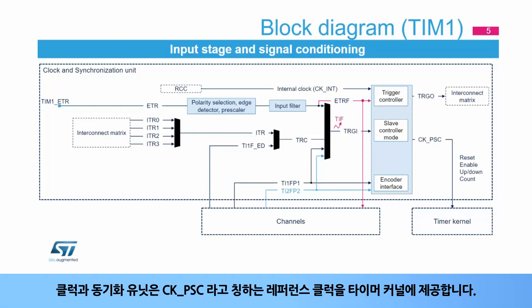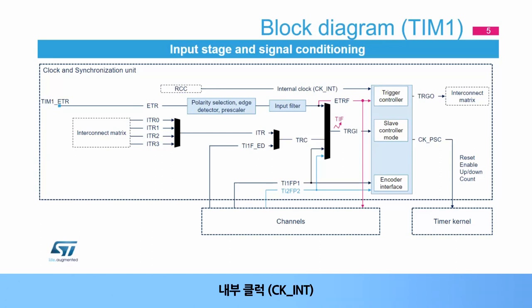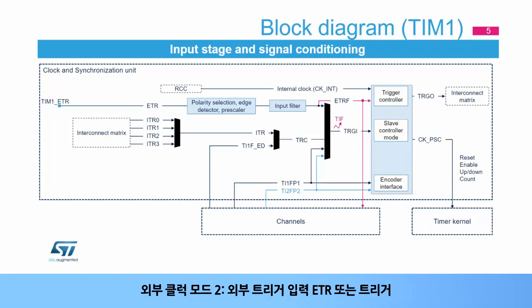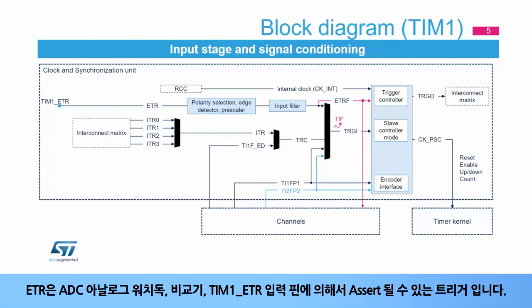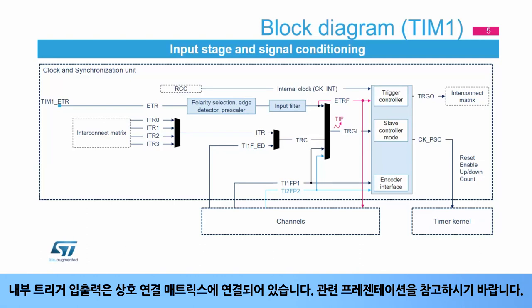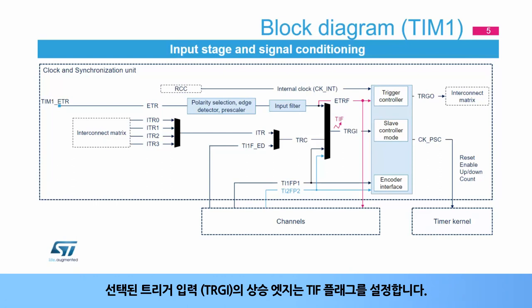The clock and synchronization unit provides the reference clock to the timer kernel called CKPSC. The counter clock can be provided by the following clock sources: the internal clock CKINT; external clock mode 1, counting each rising or falling edge on a selected input or internal triggers; external clock mode 2, external trigger input ETR or triggers; and encoder mode, based on TI1-FP1 and TI2-FP2 coming from the channels. ETR is a trigger that can be asserted by ADC analog watchdogs, comparators, or TIM1-ETR input pin. A rising edge of the selected trigger input TRGI sets the TIF flag.